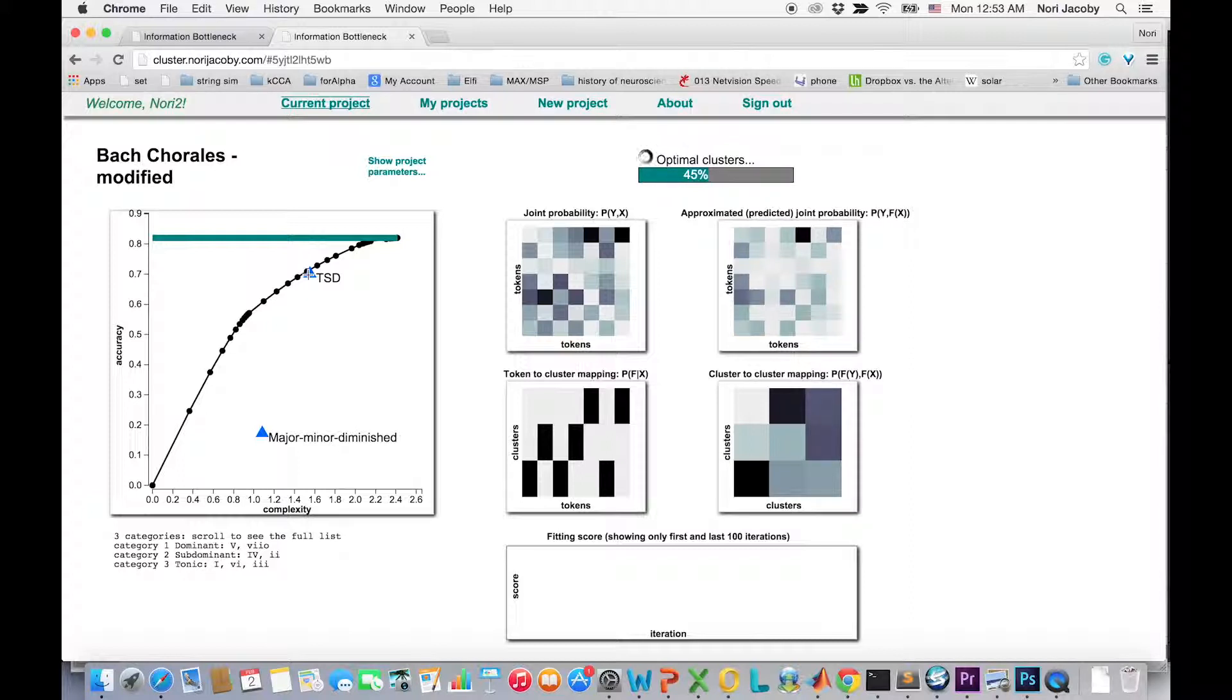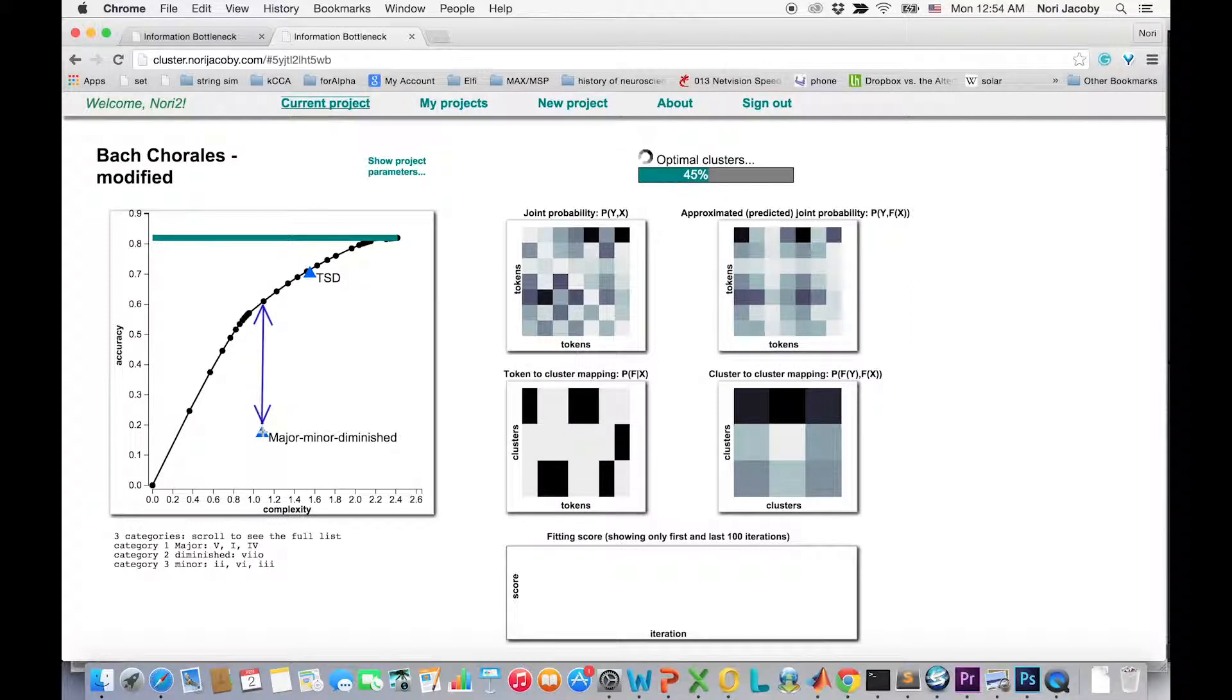the categorization to mode major, minor, diminished is far from being optimal. We can see this since major, minor, diminished is positioned on the curve far from the optimal black curve.